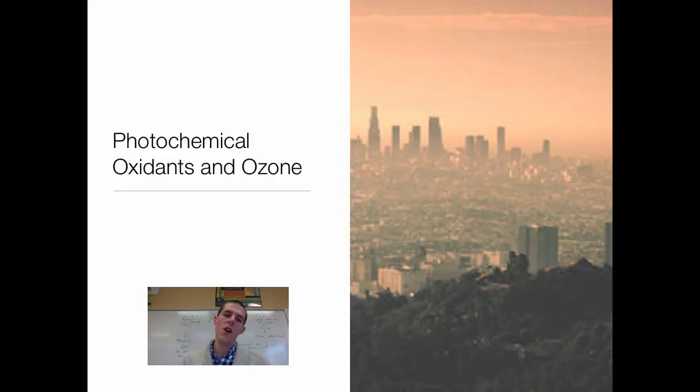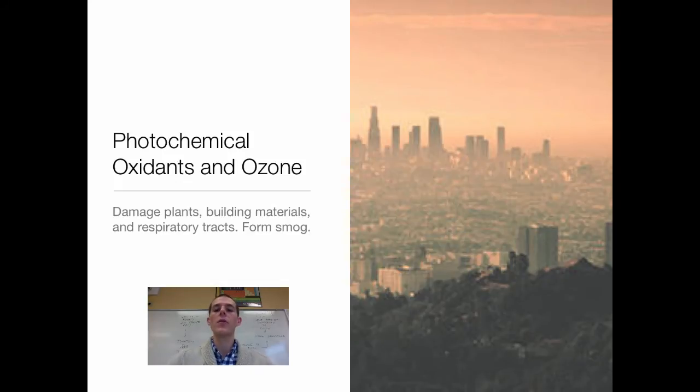A couple things to finish up. We are almost done. So photochemical oxidants and ozone. Photochemical oxidants are, what's the best way to say this? They are pollutants that form in the presence of sunlight. So photo, right there you got sun or you got light. Sunlight acts on these chemicals to form oxidants. Oxidants can damage plants. They can damage building materials. They are huge respiratory tract irritants.